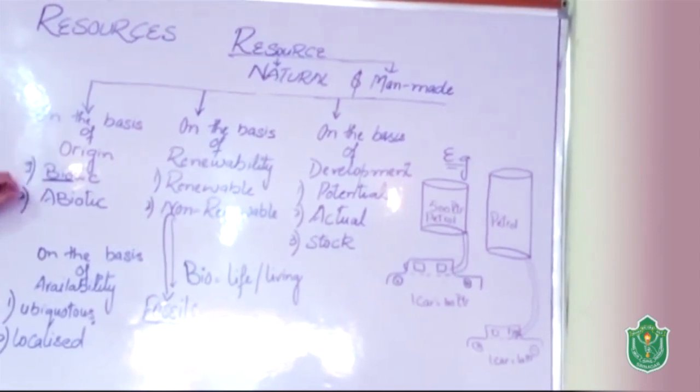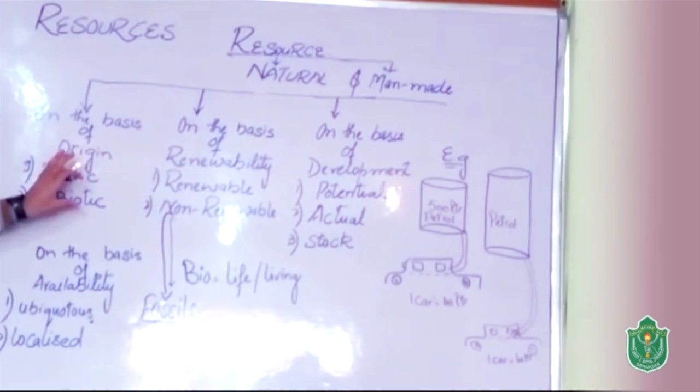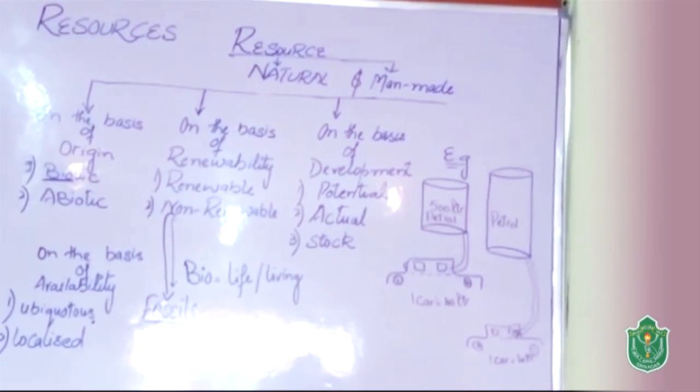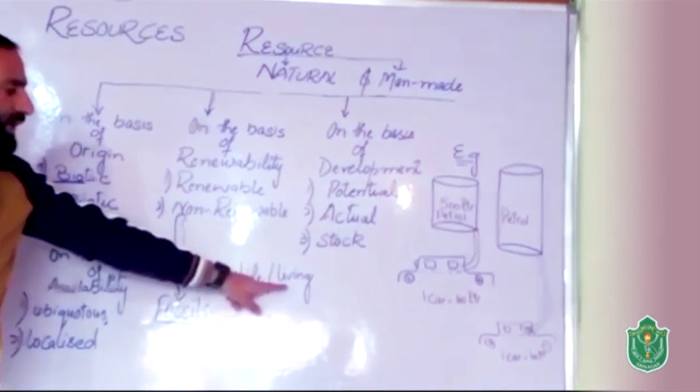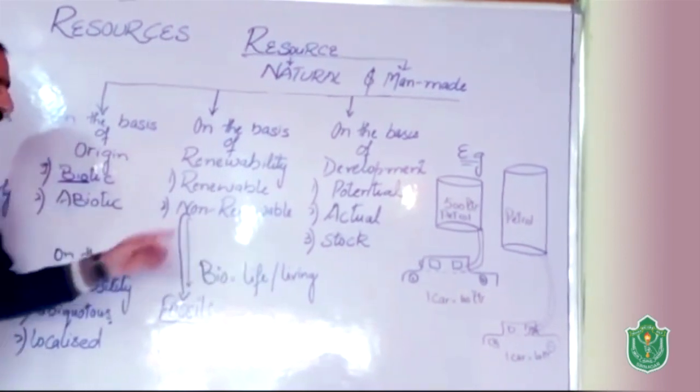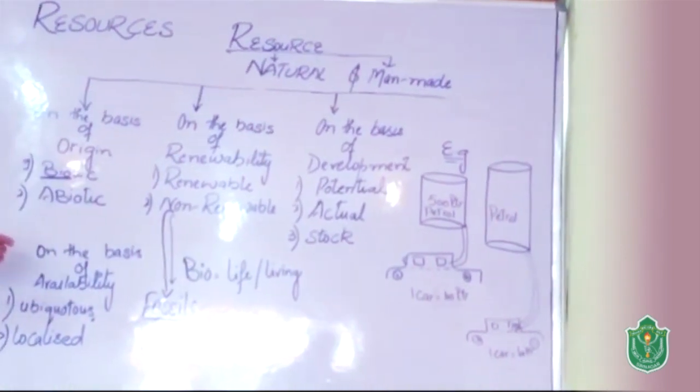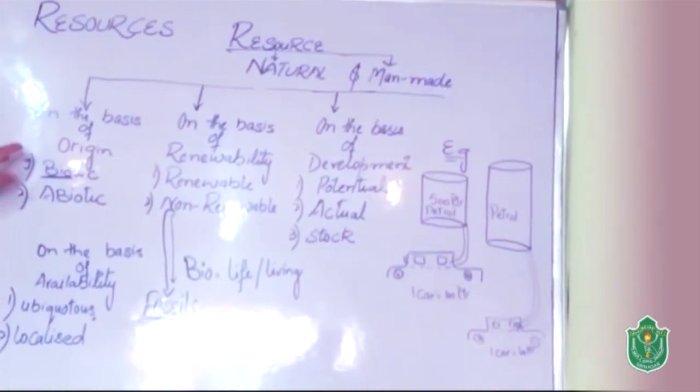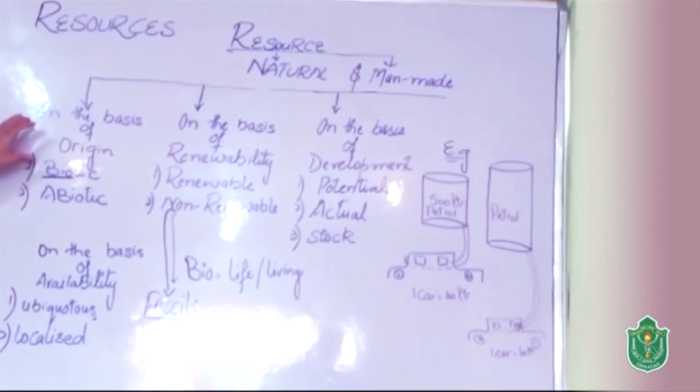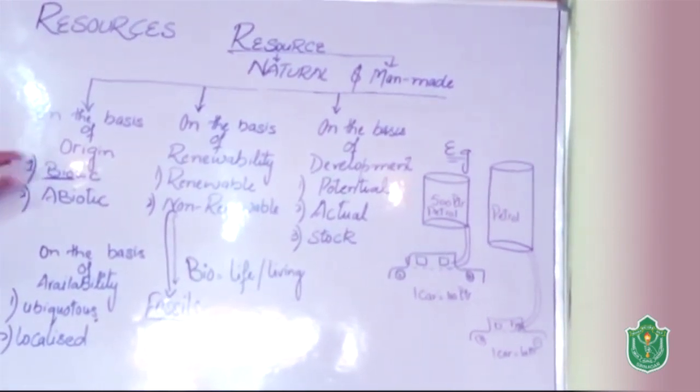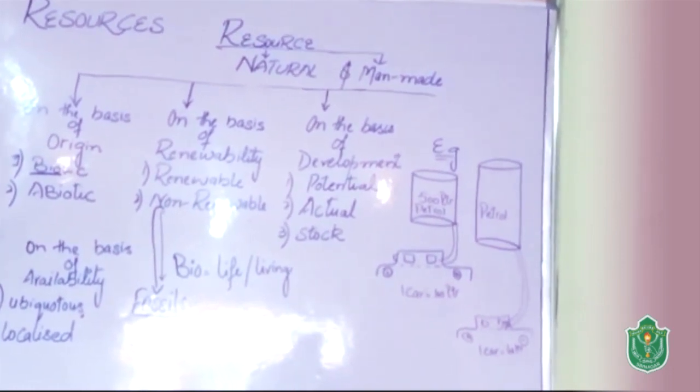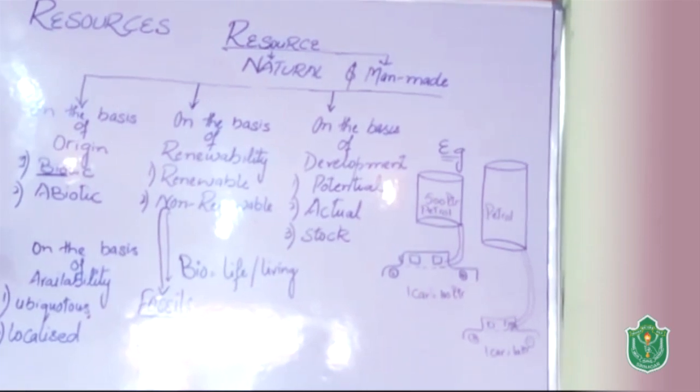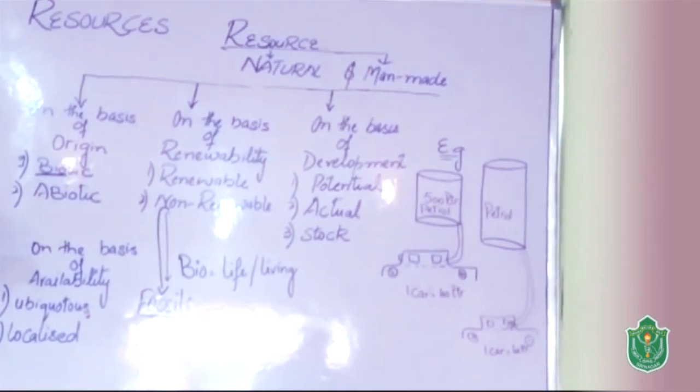One is biotic and second is abiotic. Bio means life or living, like biology, biopic. That means biotic resources are those natural resources which are living like human beings, like animals, like plants.